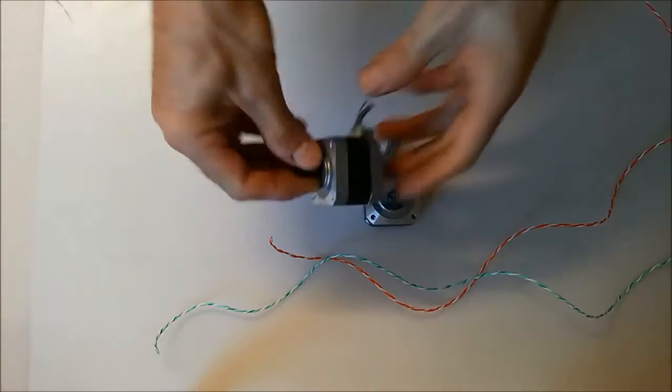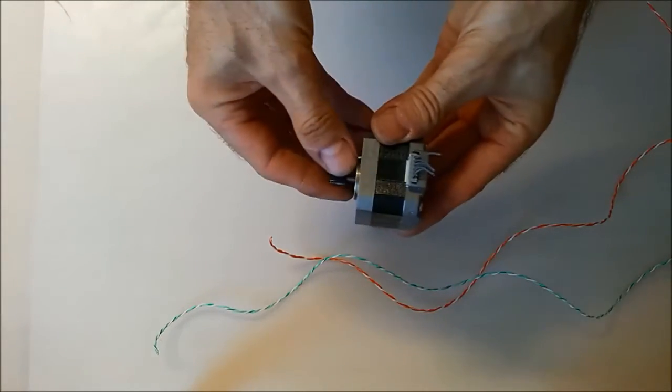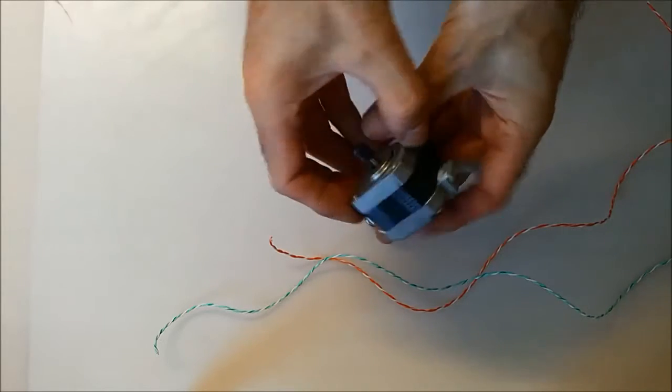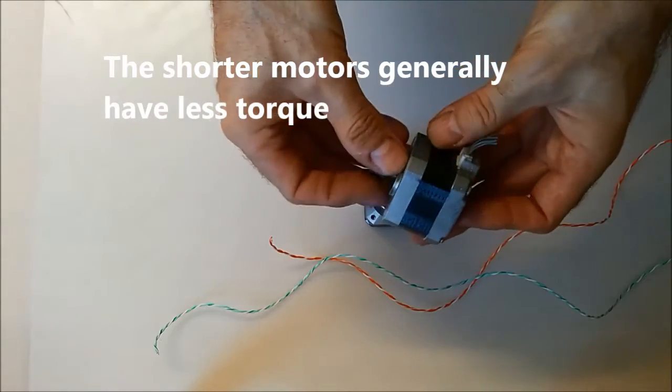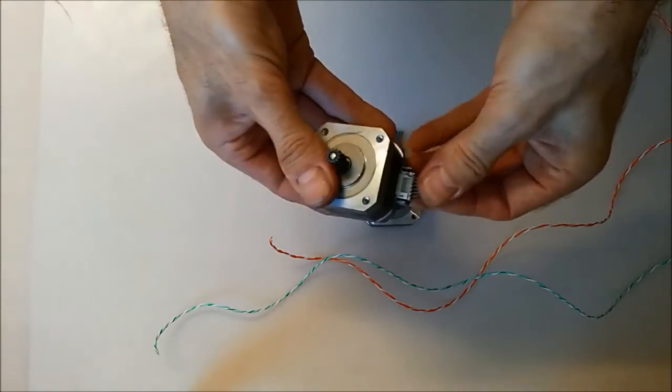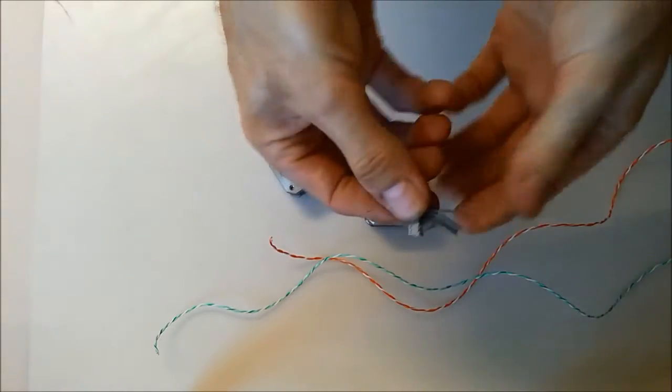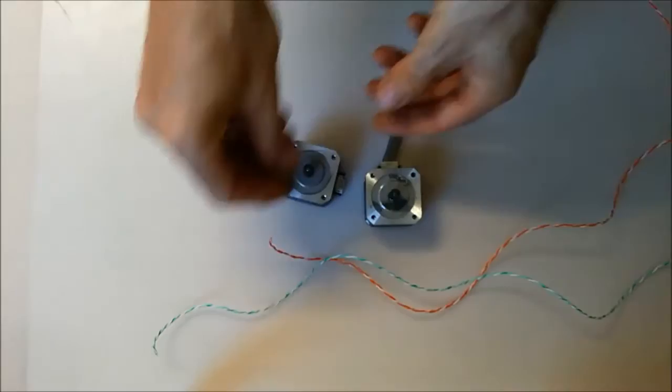Next we're going to set up the Y-axis motors. We've grabbed a couple of NEMA 17s, some of the shorter ones because these don't need to be very strong. The shorter they are, generally the weaker they are. We're just going to pull the connector out and we're going to solder some wires onto this.